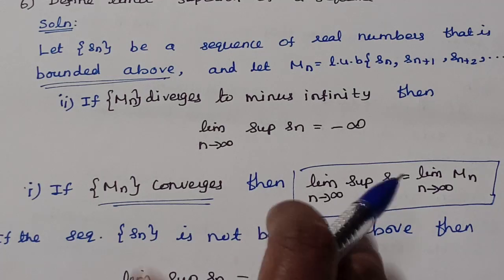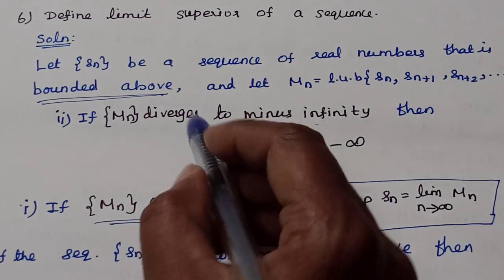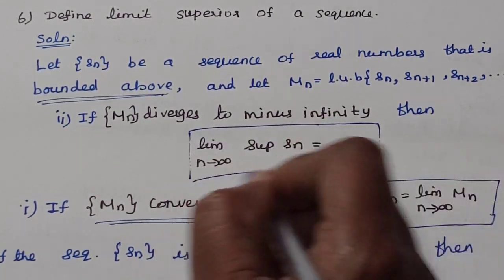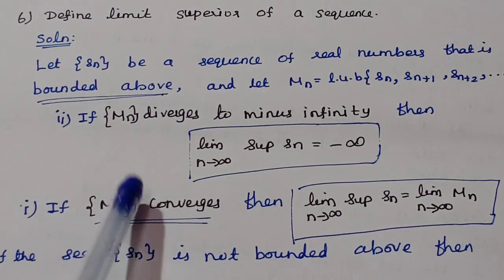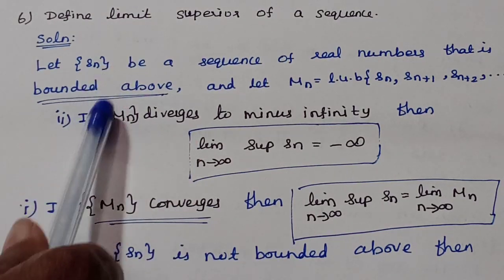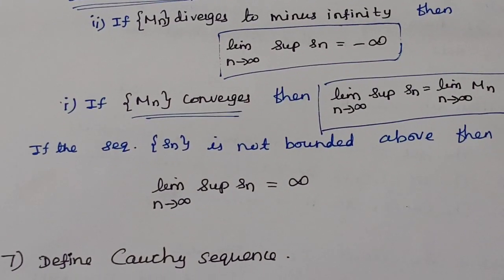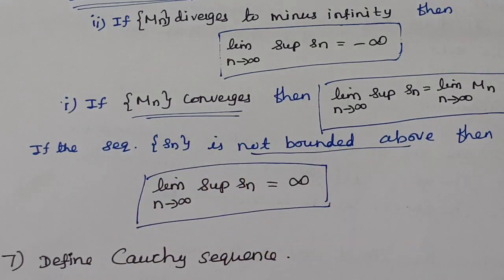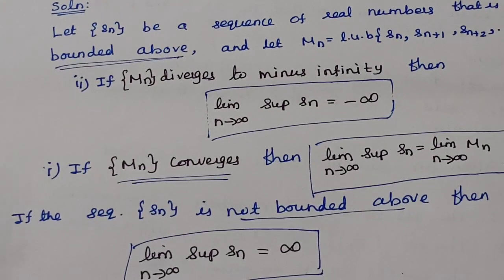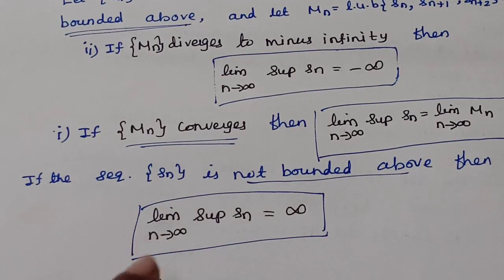If Mₙ diverges to −∞, then lim sup Sₙ = −∞. If Sₙ is not bounded above, then lim sup Sₙ = +∞. These are the two conditions for the definition of limit superior.